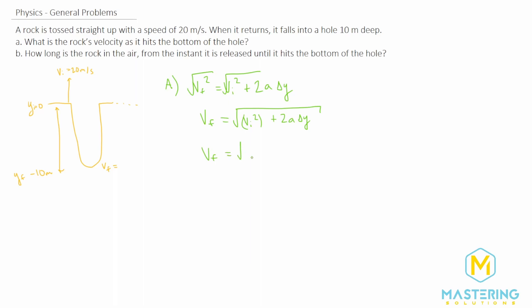So v initial squared we said is a positive 20 meters per second, and then we'll add to that 2 times the acceleration. In this case, it's a negative g, so a negative 9.8 meters per second squared. g is pointing downward, that's why it's negative.